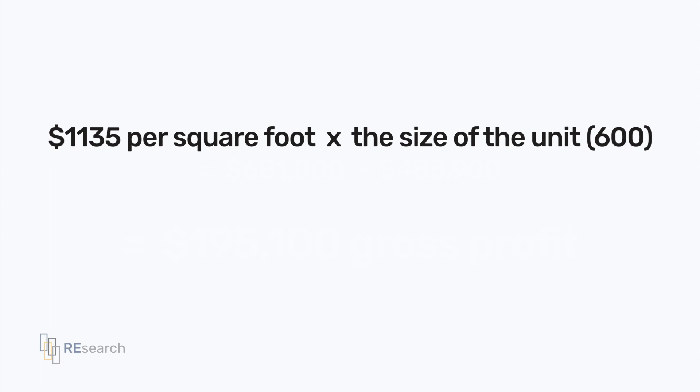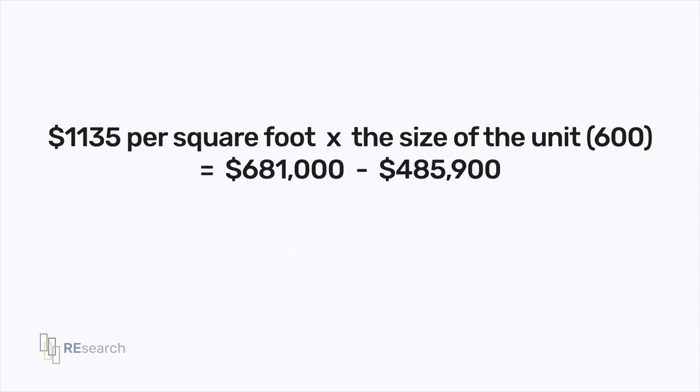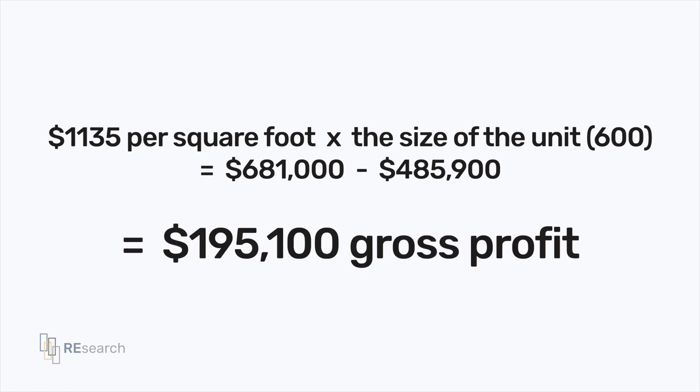If I anticipate that the building should achieve occupancy late 2024 into 2025, here are the projections: at $1,135 per square foot times the size of the unit — 600 square feet — the value of the unit would be $681,000. Minus my original purchase price of $485,900, that results in a gross profit of $195,100. I use the same increase in value per year because of my ultra-conservative approach. It's better to be pleasantly surprised if it's more than expected than to be disappointed. This will also help me realistically plan out future investments.